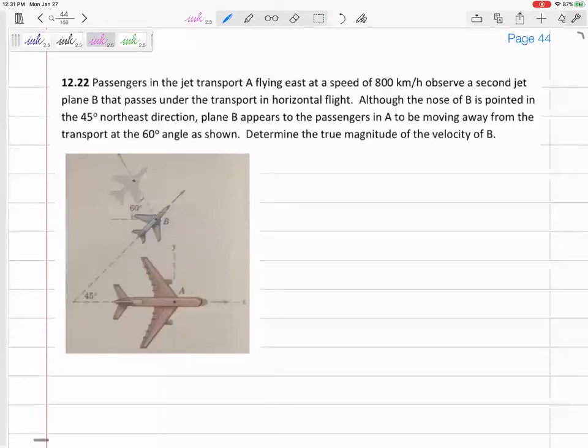This is pretty cool. All right, so passengers in jet A are going 800 kilometers per hour due east, right in the figure. They observe a second jet plane B that passes under in horizontal flight, and they see that the nose of jet B is pointed 45 degrees to the northeast, but it appears that the jet is sliding off sideways to the left wing at that 60-degree angle. Determine the true magnitude of the velocity of B.